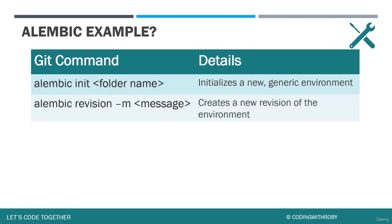The next command is the revision command. Revisions are a way to write a specific step to enhance our database. We create a new revision file by typing 'alembic revision -m' and then adding a message or note so we know what the revision file's purpose is. The '-m' stands for message, so it's 'alembic revision --message' followed by the message text.